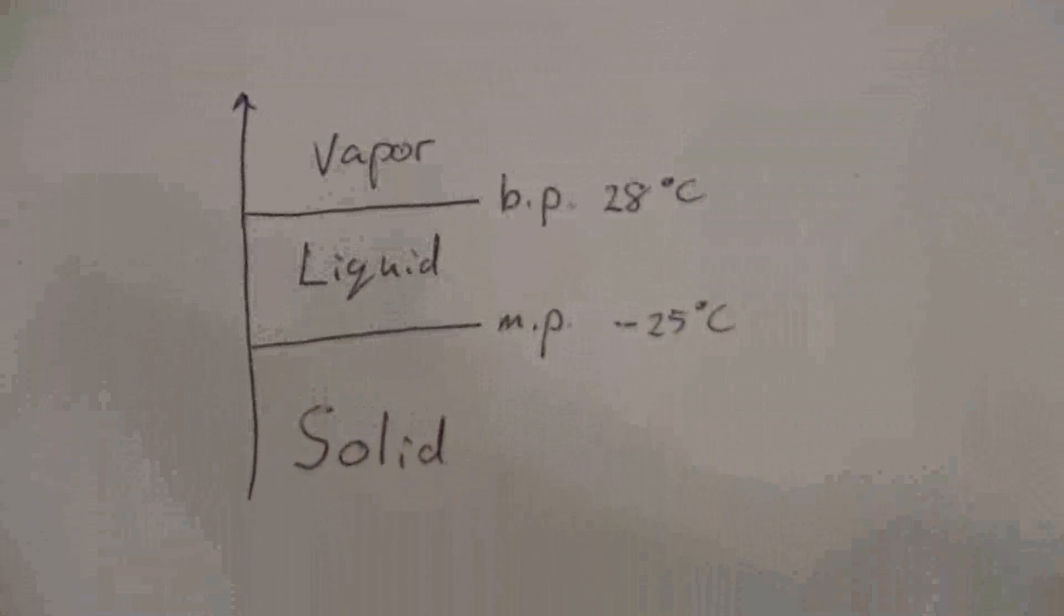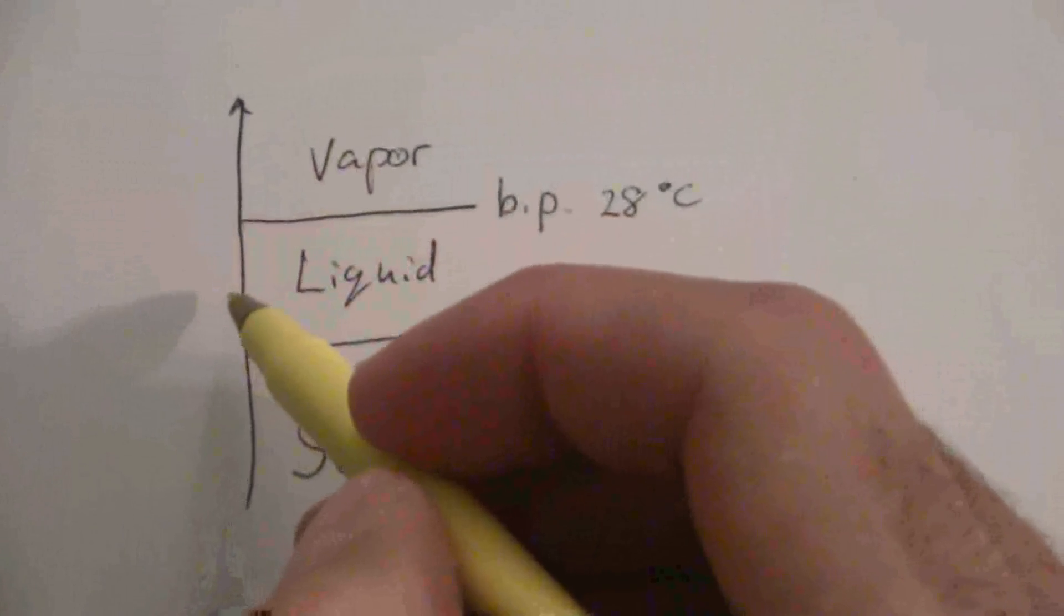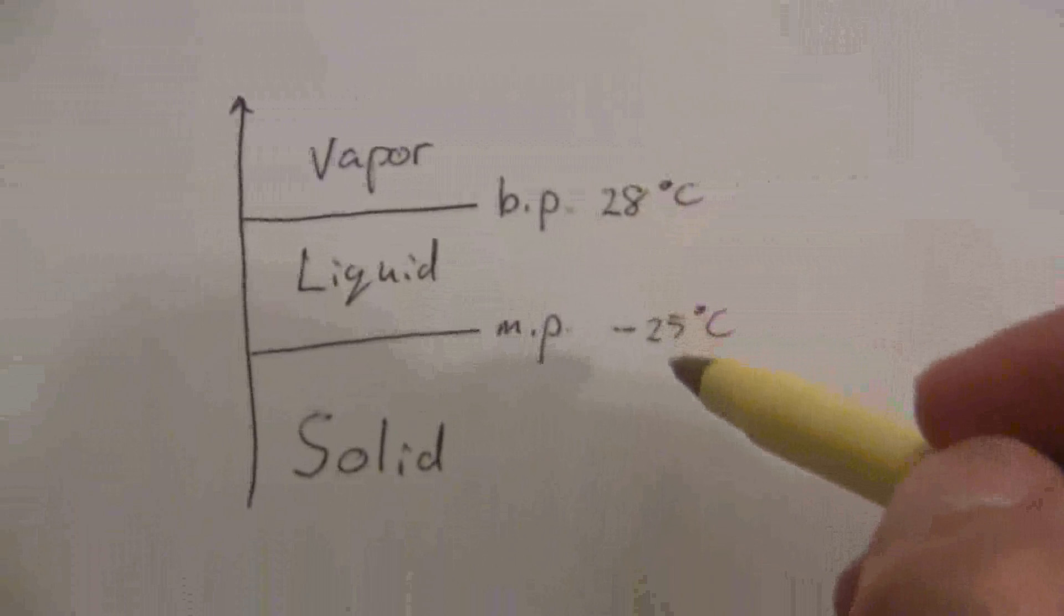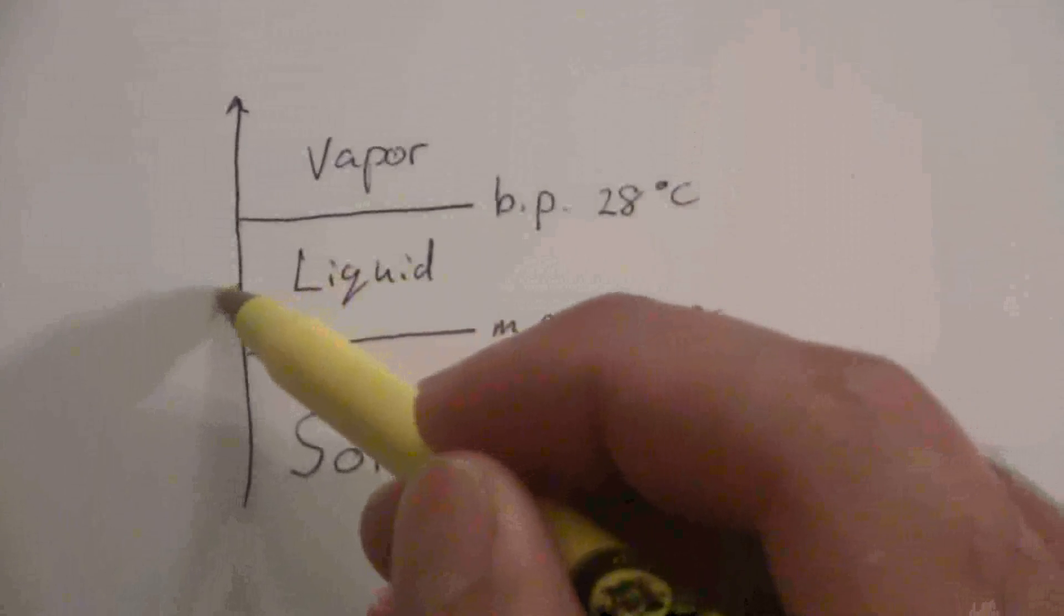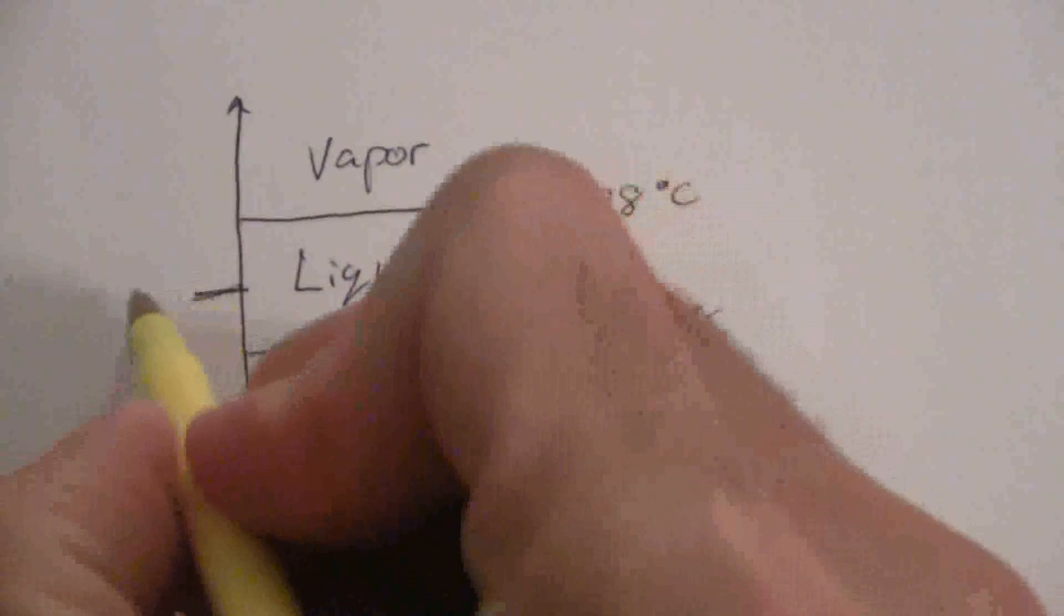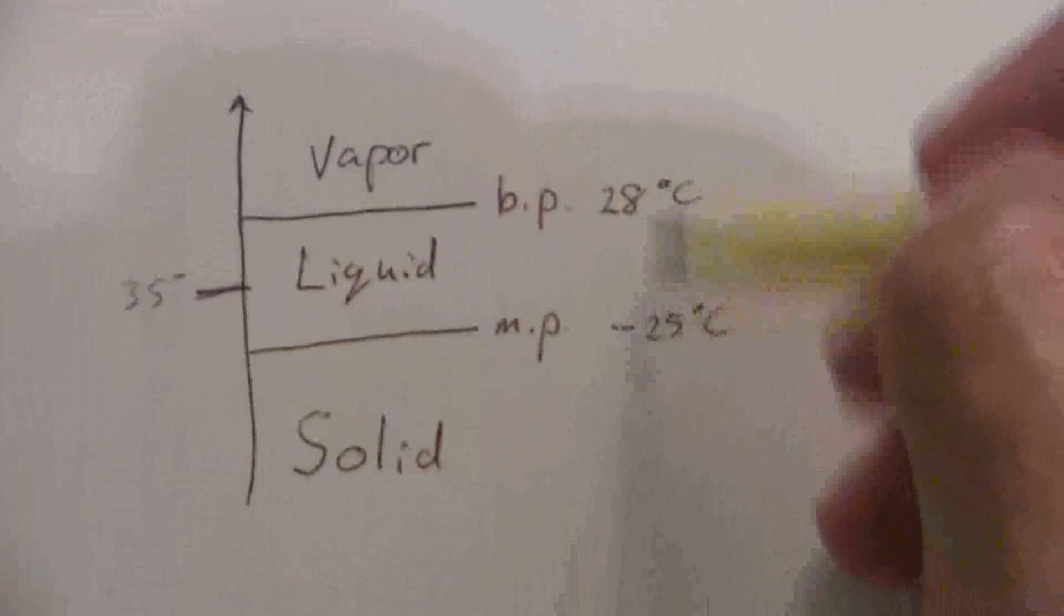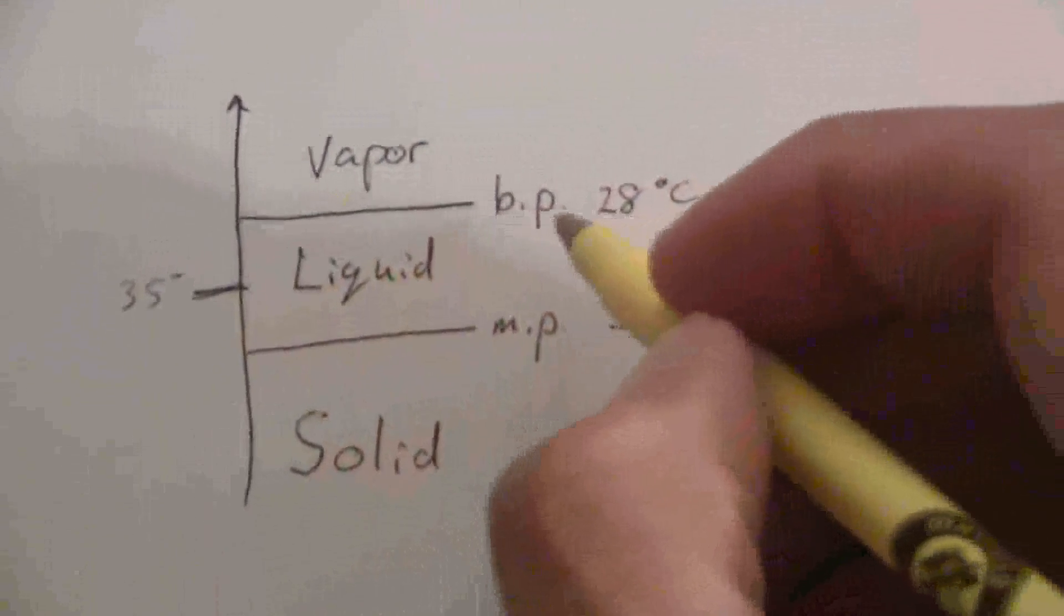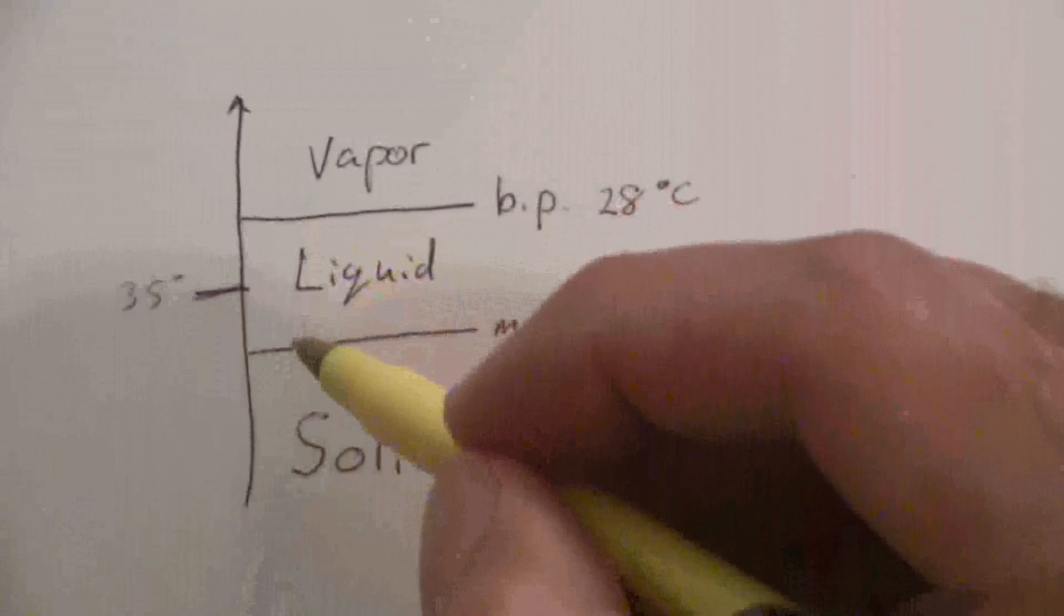So if we want to know is this substance a liquid at 35? Then we say, okay, what would its boiling point have to be? What would its melting point have to be? If it's going to be a liquid at 35, that would mean we would have our 35 degrees here. This obviously wouldn't be a liquid. But let's change the example. What would I have to have? What kind of a boiling point would I have to have in order for 35 to be within the liquid phase?